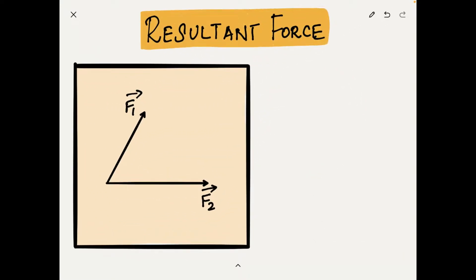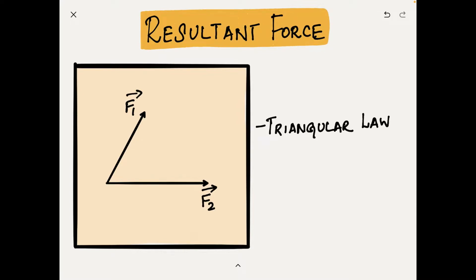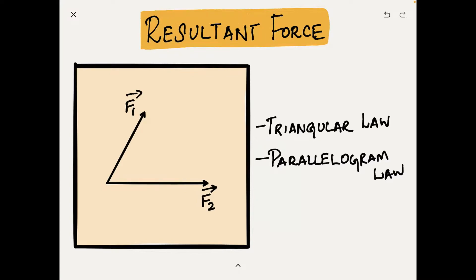I have here two forces F1 and F2 in a two-dimensional space. If I need to calculate the resultant of these two forces, what are the options do I have? The resultant force is a single equivalent force which can replace these two forces in a system, but how can I calculate it — what is its magnitude and direction? Well, to help us, there are three laws: first is triangular law, second is parallelogram law, and third is polygon law.